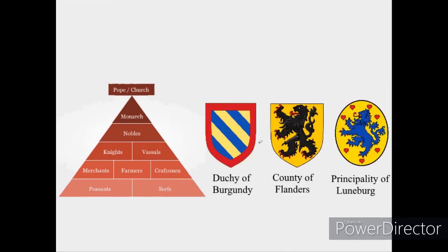Going along down are the nobility. These are your local dukes, counts, and princes. Sometimes they would be in charge of certain regions of said kingdom, and the rest would be owned directly by the crown. They would gain lands from the king, and in exchange, they would give the king loyalty, money, and knights for wars.